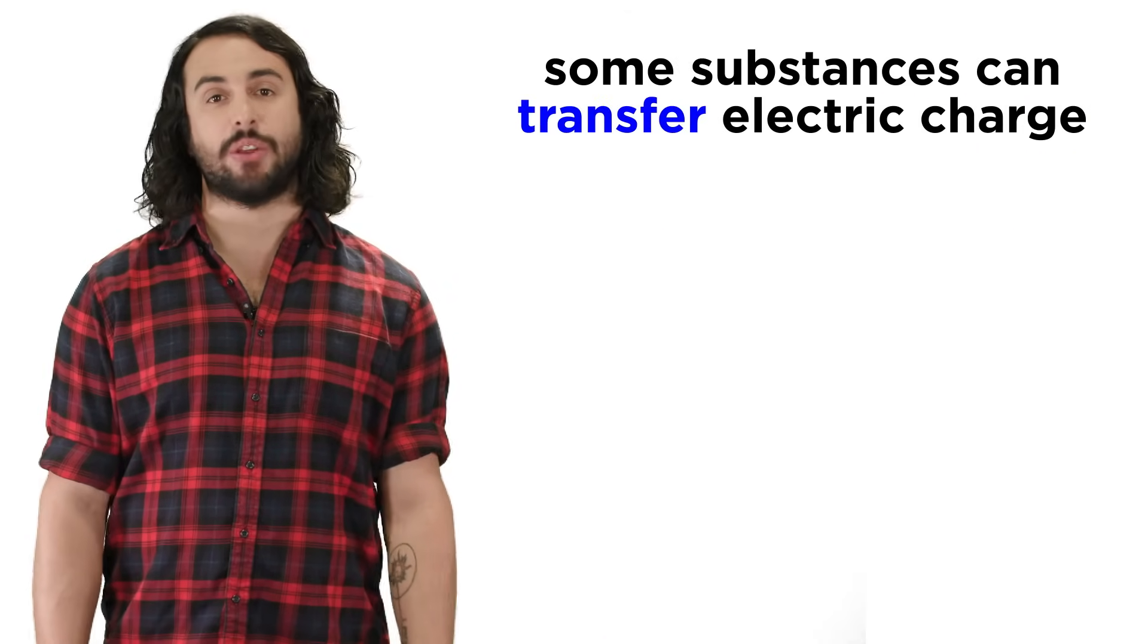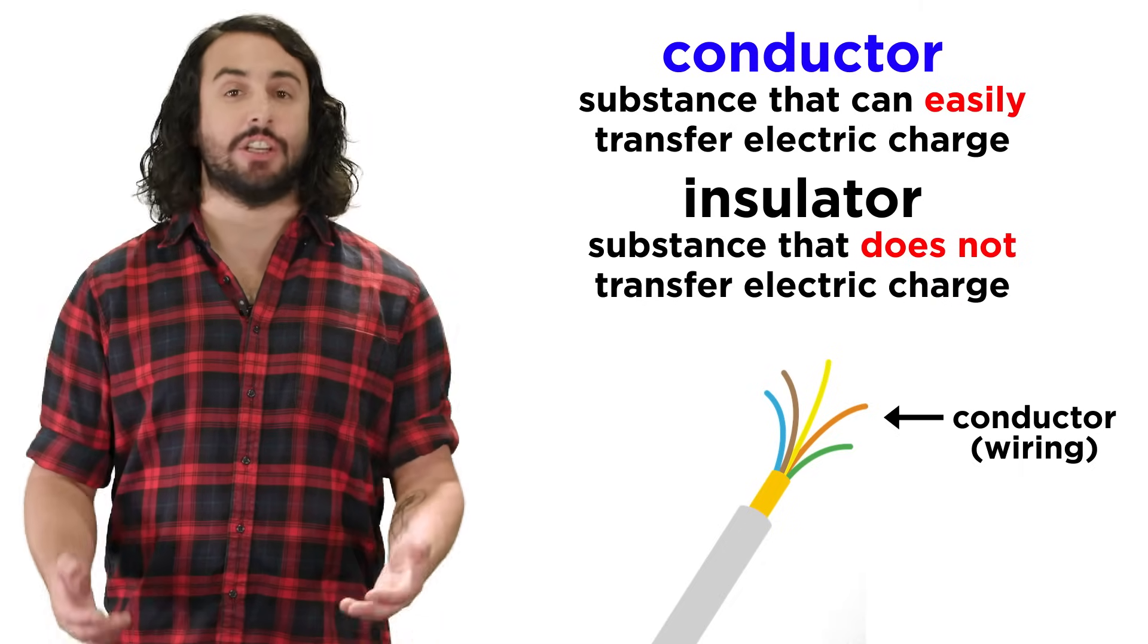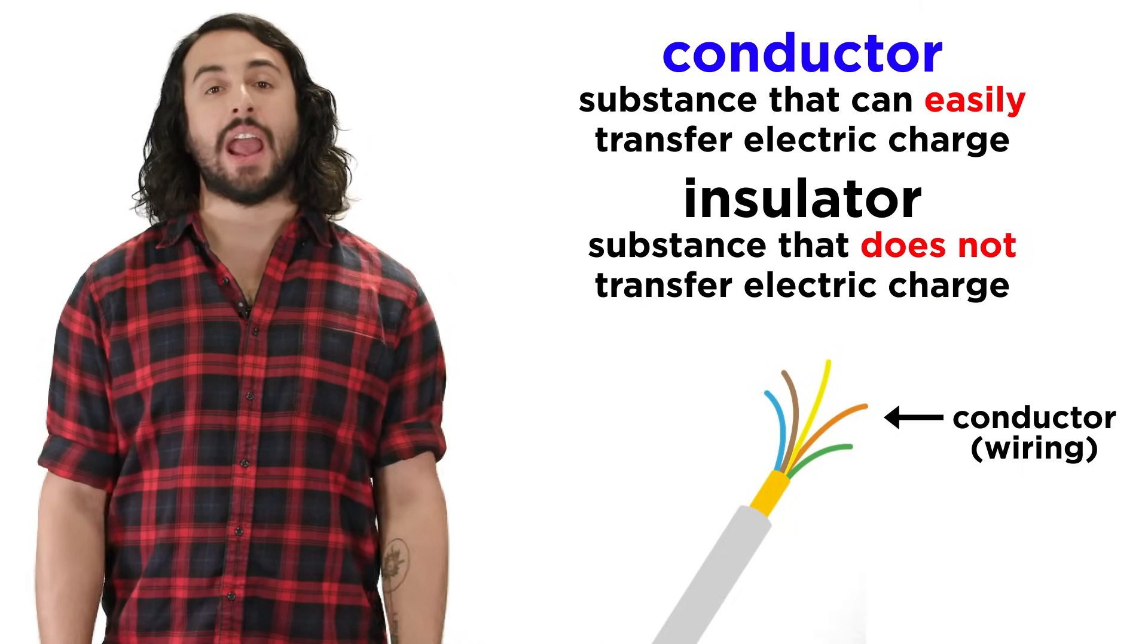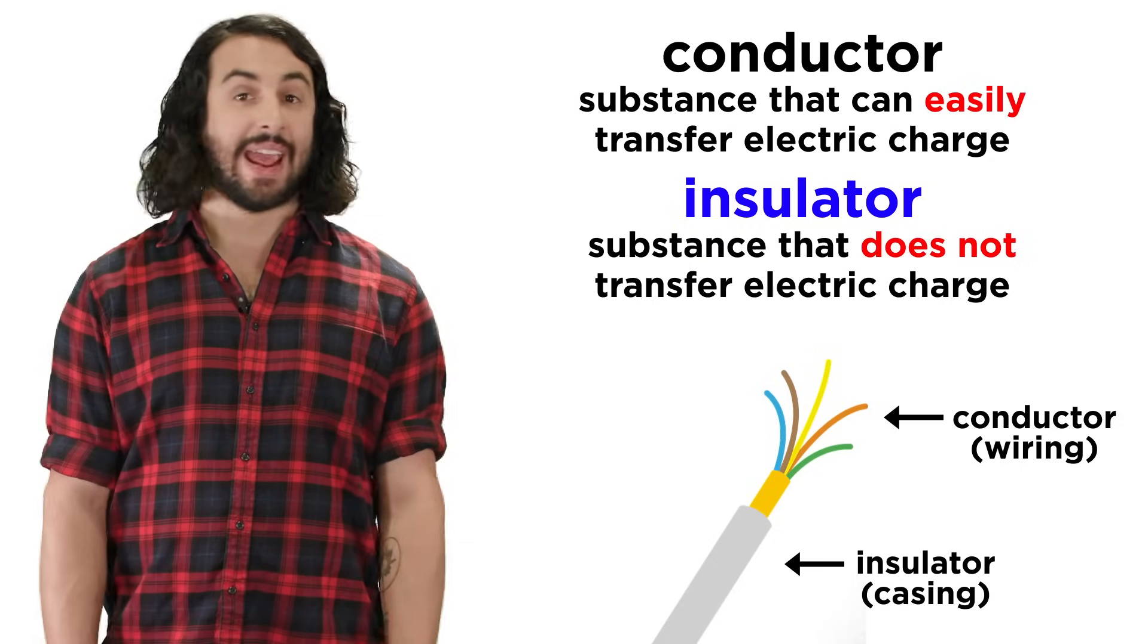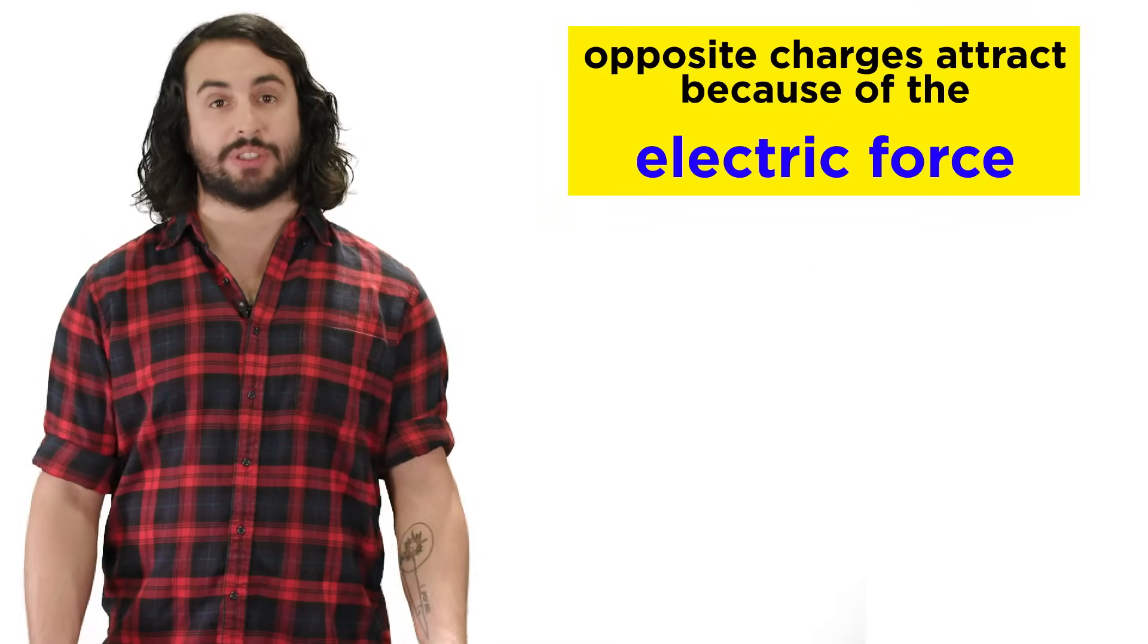We can categorize substances by their ability to transfer electric charge. A substance that can easily transfer electric charge is a conductor. One that can't is an insulator. Opposite charges attract one another because of the electric force.